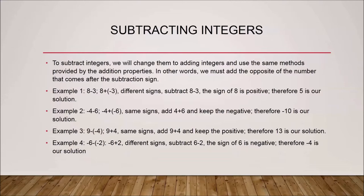The largest number is eight, which has a positive sign, so the final answer is positive five. Example two: minus four minus six — we change six to its opposite, negative six. The operation becomes minus four plus minus six. Both numbers have the same signs, so we add four and six, which is ten, and keep the negative — final answer: negative ten.